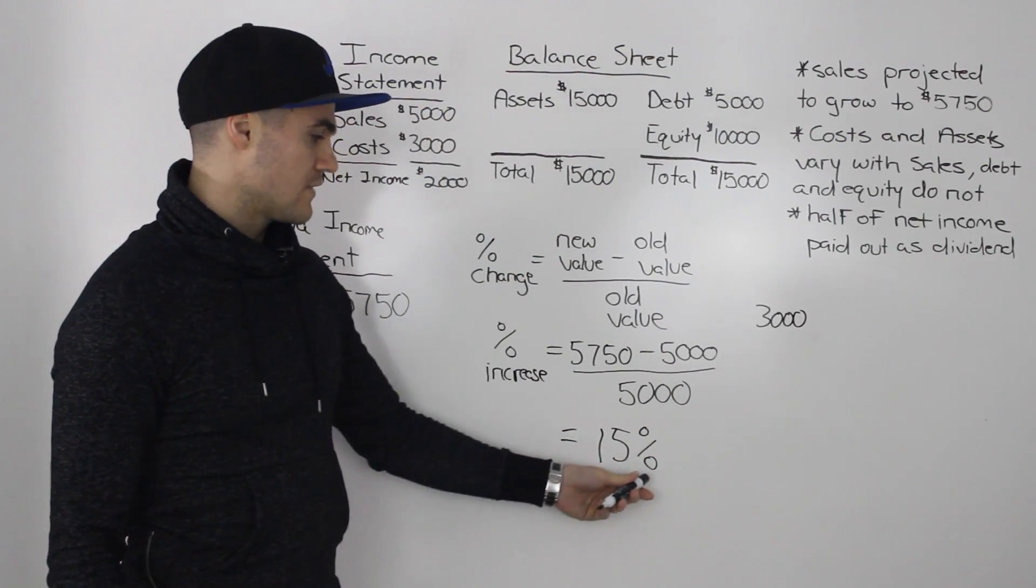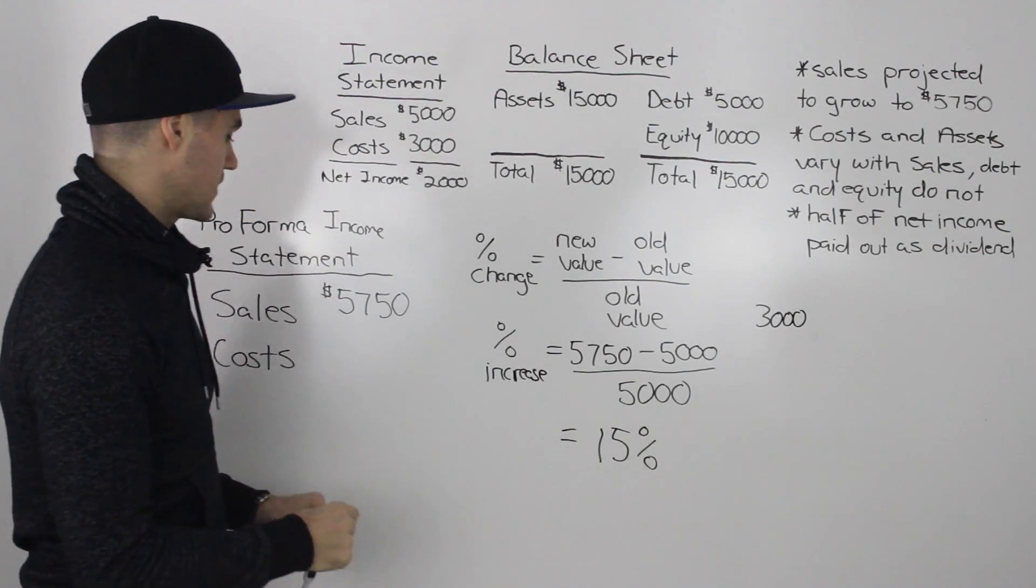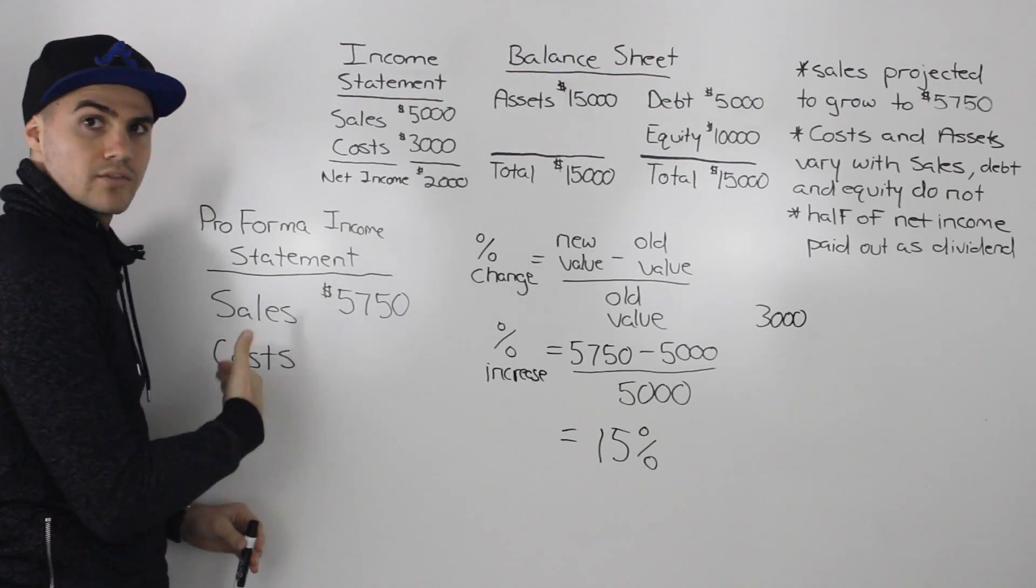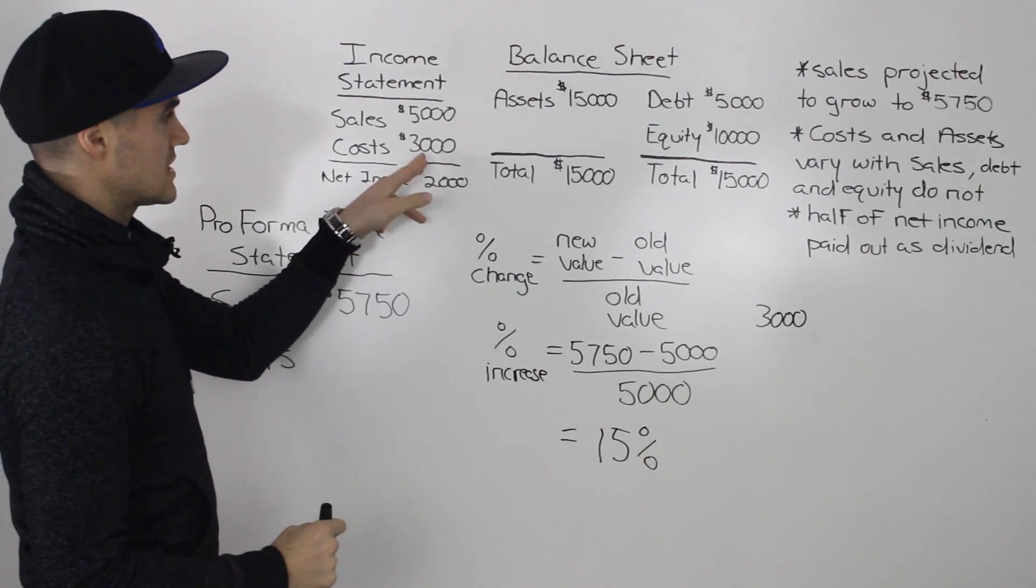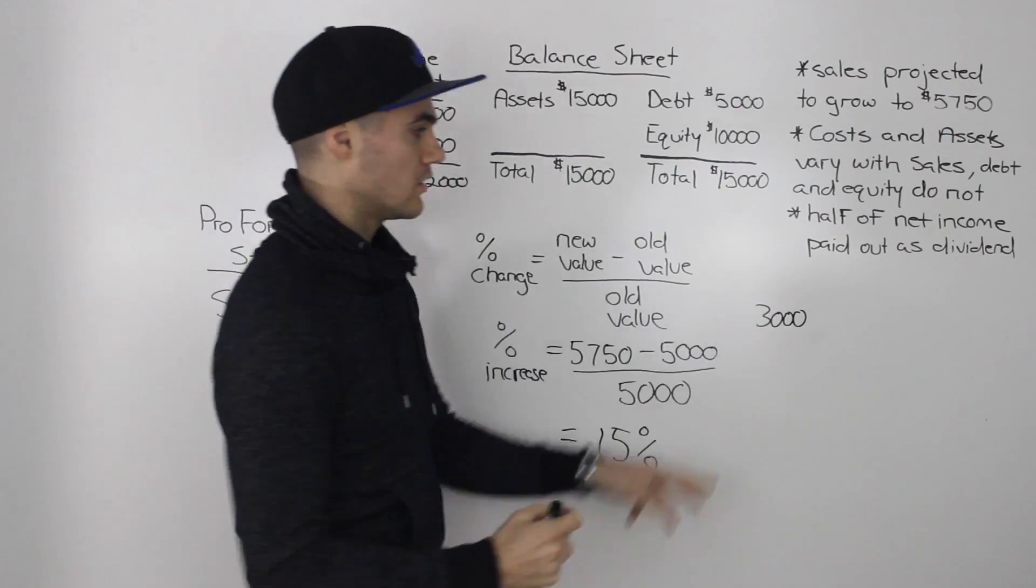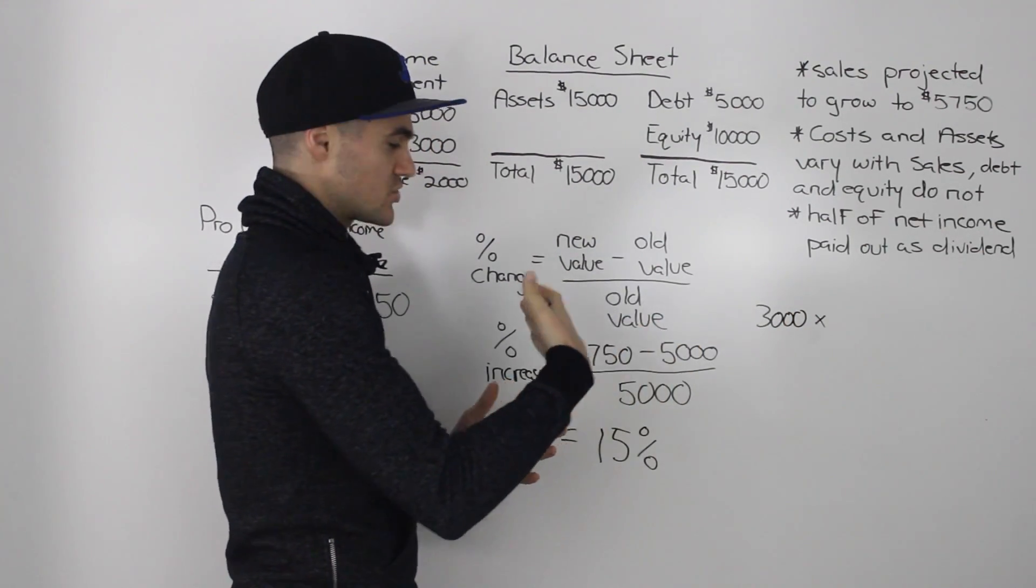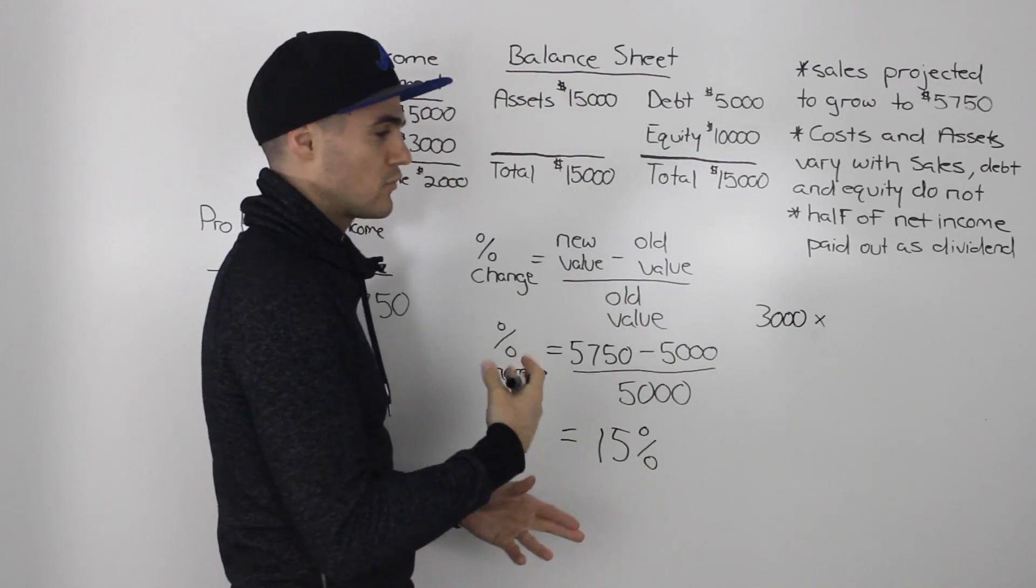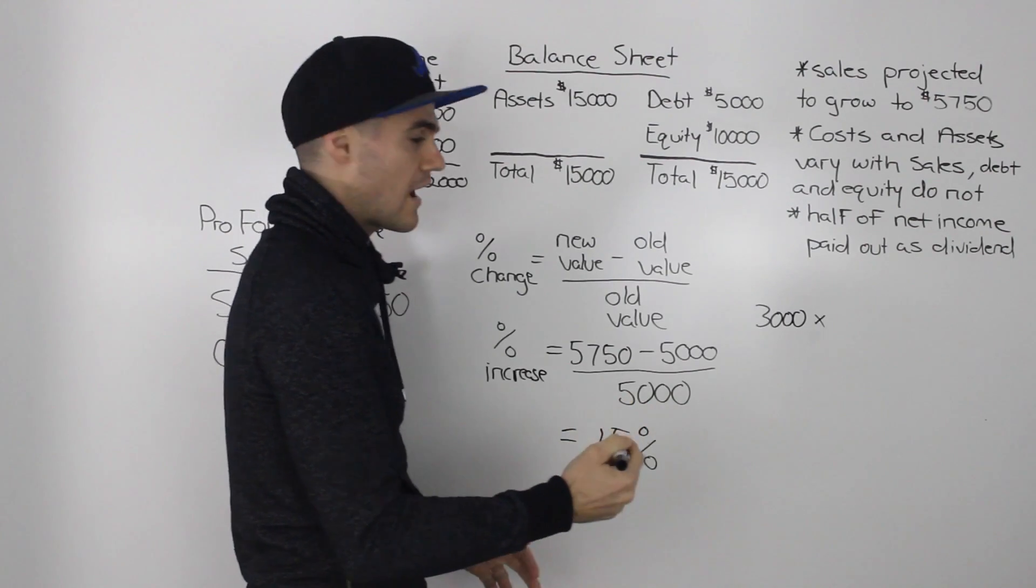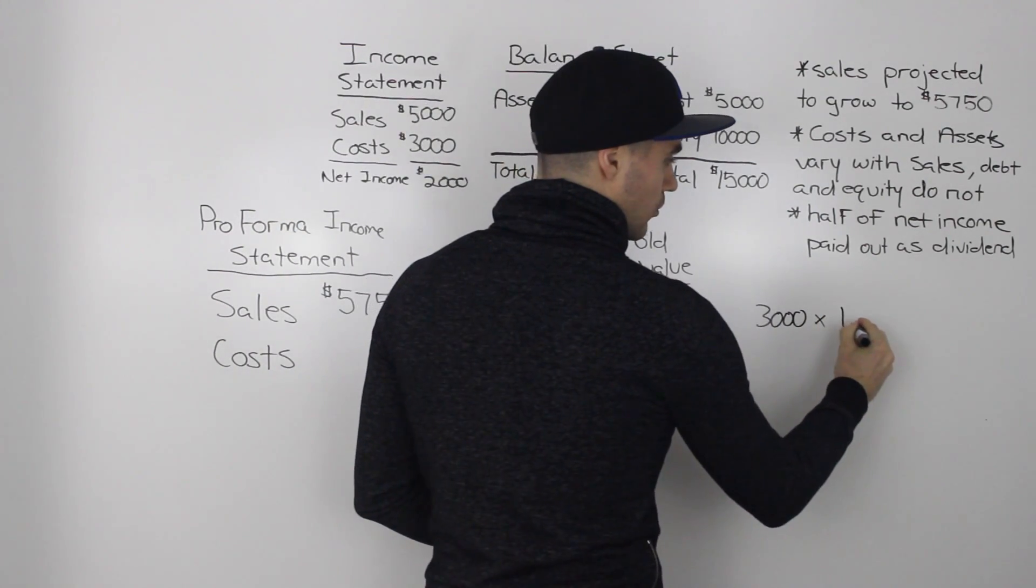And now that we have that 15% increase, we can figure out what the costs on the pro forma income statement would be. So we would just take the old costs of $3,000 and multiply them by one plus that percentage increase in decimal form. So one plus 0.15 which just gives us 1.15.